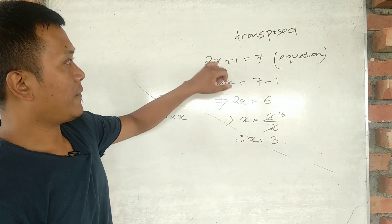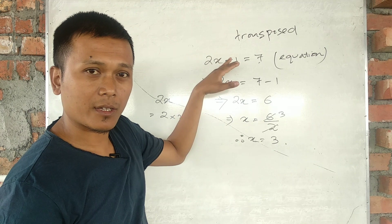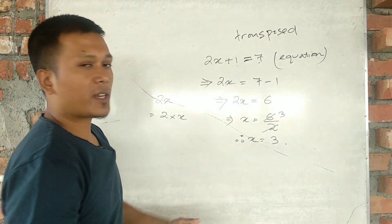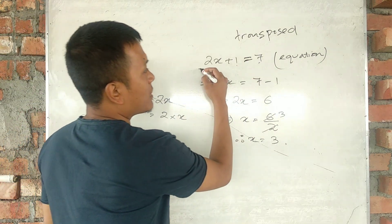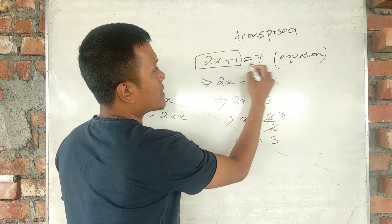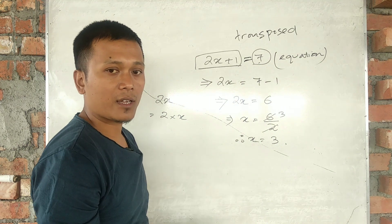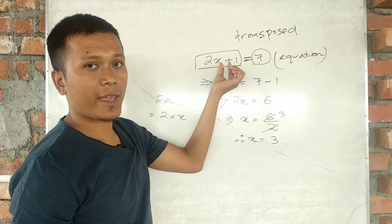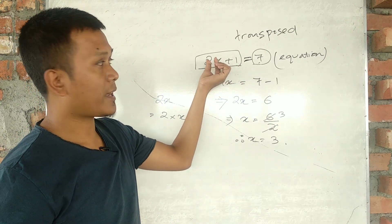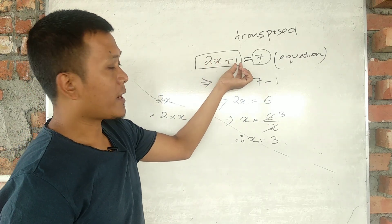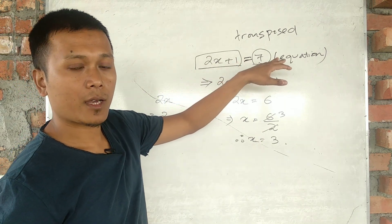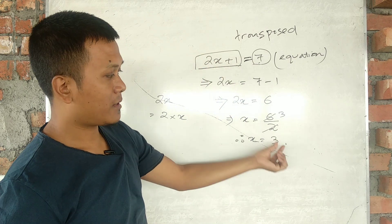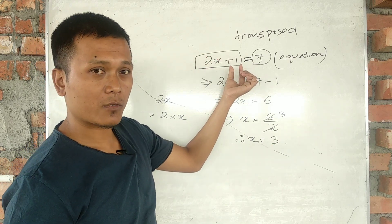Therefore x value is 3. Let us verify by substituting into the original equation. We check: 2 multiplied by 1, plus 5 gives 7, and 7 equals 7. The equation is balanced, confirming our answer.